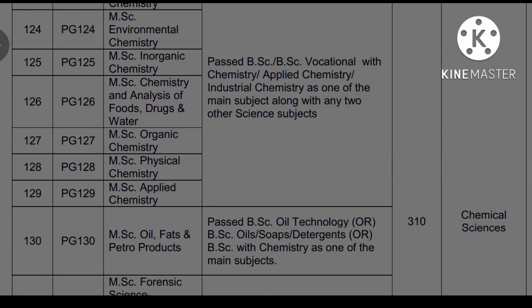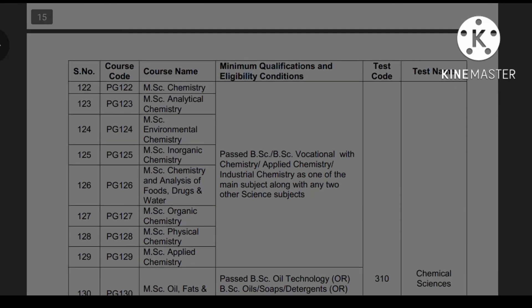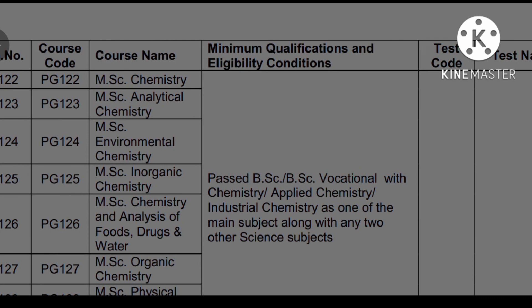These are the different courses present in Chemical Science, along with their eligibility and course codes. Course codes are very important. The different courses include MSc Chemistry, MSc Analytical Chemistry, Environmental Chemistry, and Inorganic Chemistry. If you are interested in MSc Chemistry, it is part of this group.